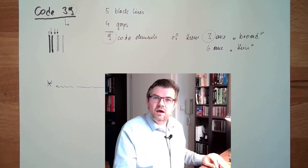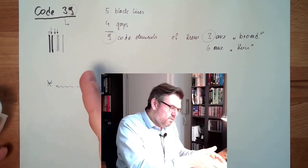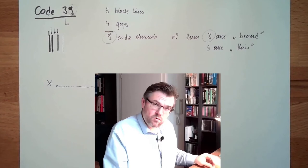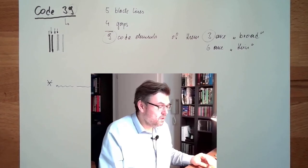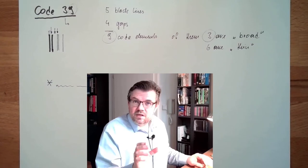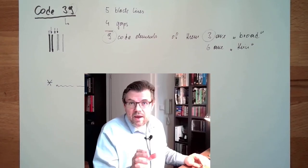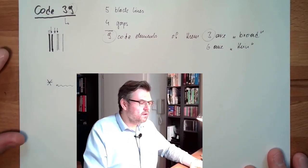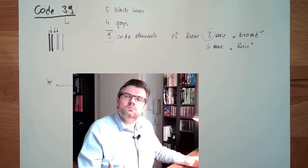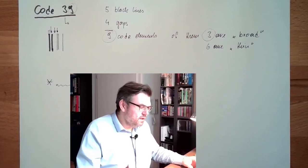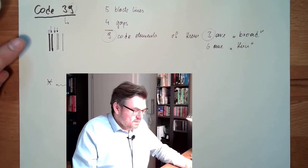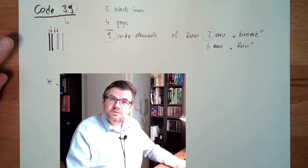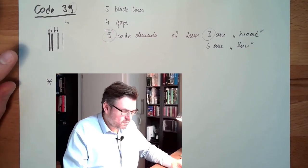Code 39 has relatively low alphabet, so there are not that many letters available, and also the density is not that high because for every letter you need this space. We will hear about other codes, Code 128 for instance, where the information density is higher.